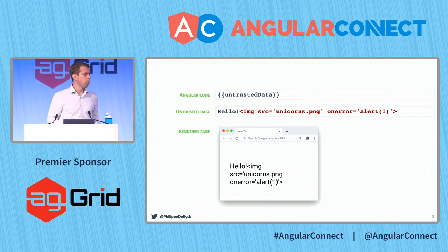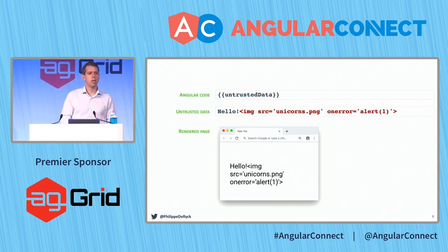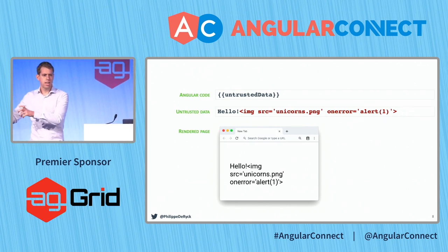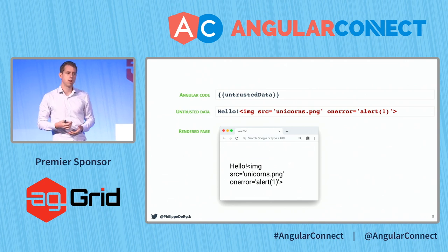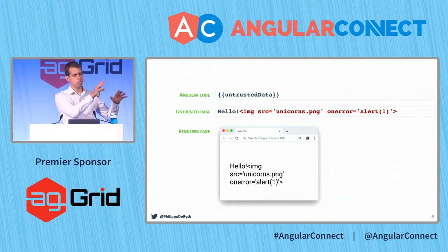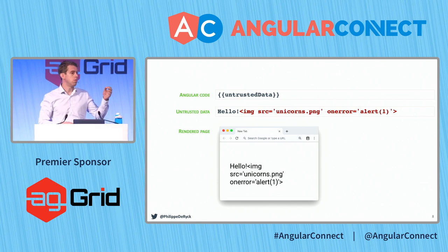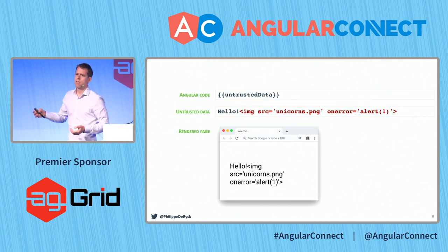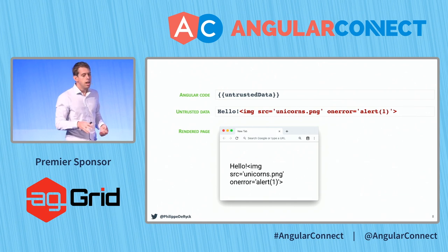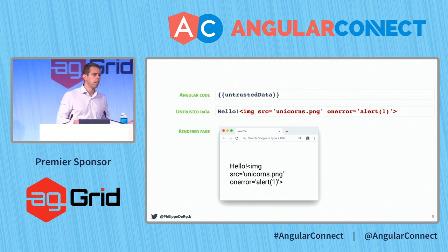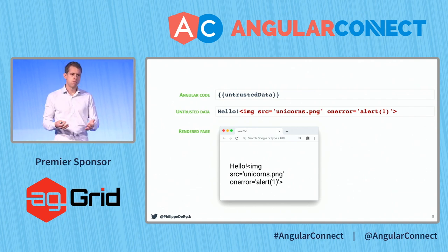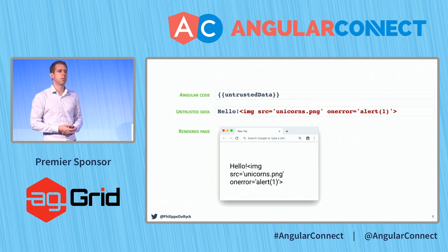Everywhere you put data, Angular applies something called strict contextual escaping — Angular looks at where you're putting data and knows which things are dangerous there, so it won't allow that to happen. Old applications in PHP, Java Server Pages, or ASP had to do this themselves. Modern Angular applications on the frontend do this automatically. Angular is not alone — React does it, Ember does it, and Vue as well. This is a massive step forward.